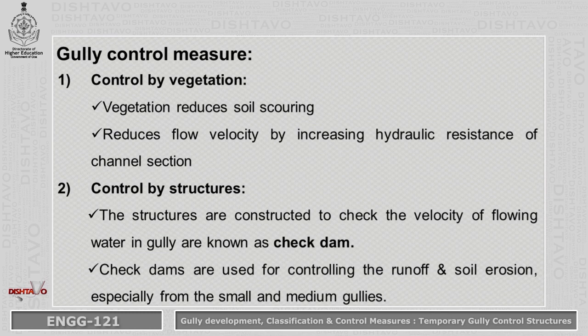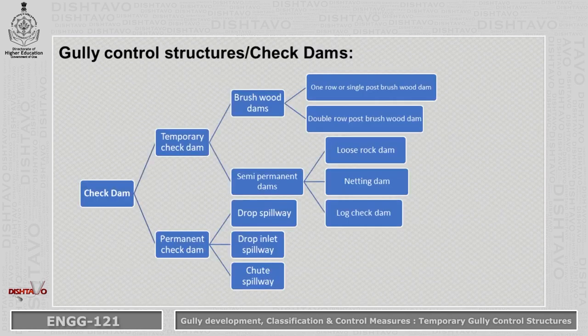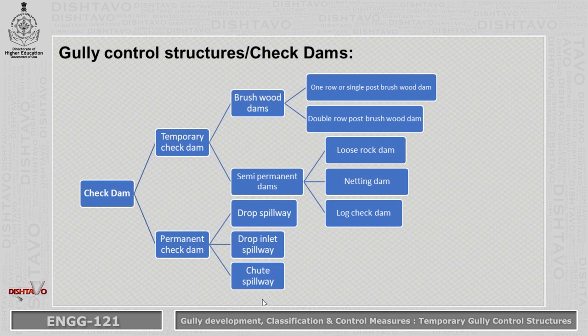Control by structures. Structures constructed to check or reduce the velocity of flowing water in gullies are known as check dams. Check dams are used for controlling runoff and soil erosion, especially from small and medium gullies. Check dams are classified into two types: temporary check dams and permanent check dams. Temporary check dams have two types: brushwood dams and semi-permanent dams. Permanent check dams have three major types: drop spillway, drop inlet spillway, and chute spillway.